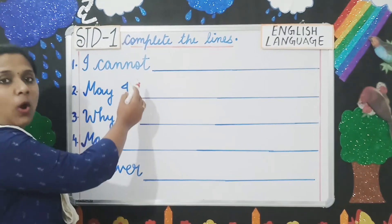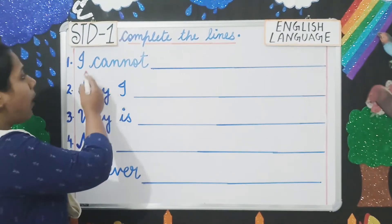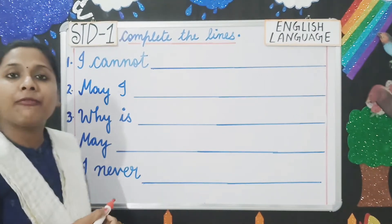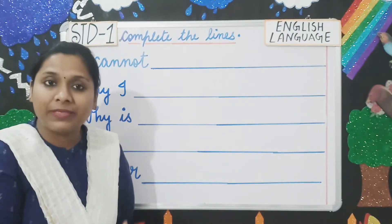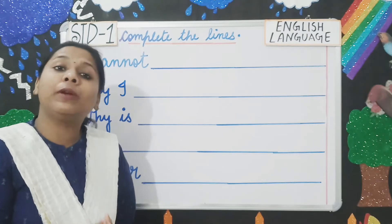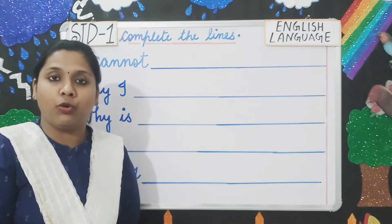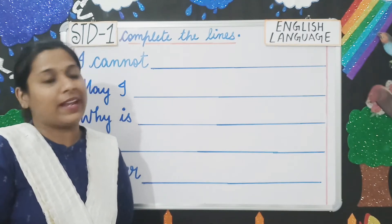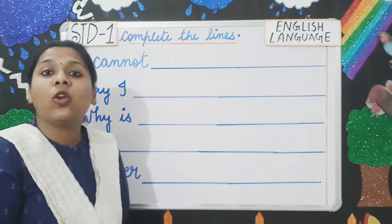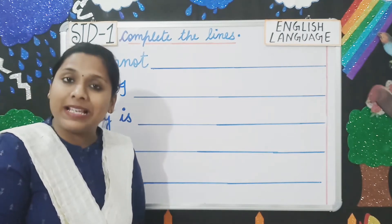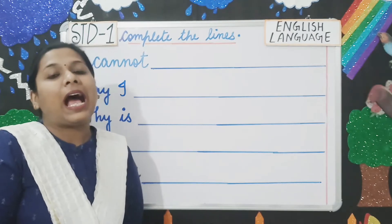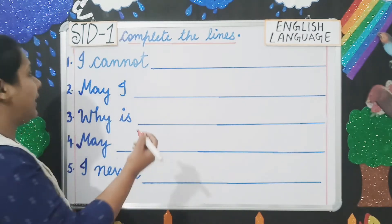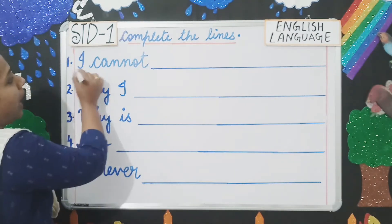The first prompt is 'I cannot.' You have to write something which you cannot do. For example, you can write 'I cannot ride a bicycle' or 'I cannot ride a horse.' You can write anything like that.